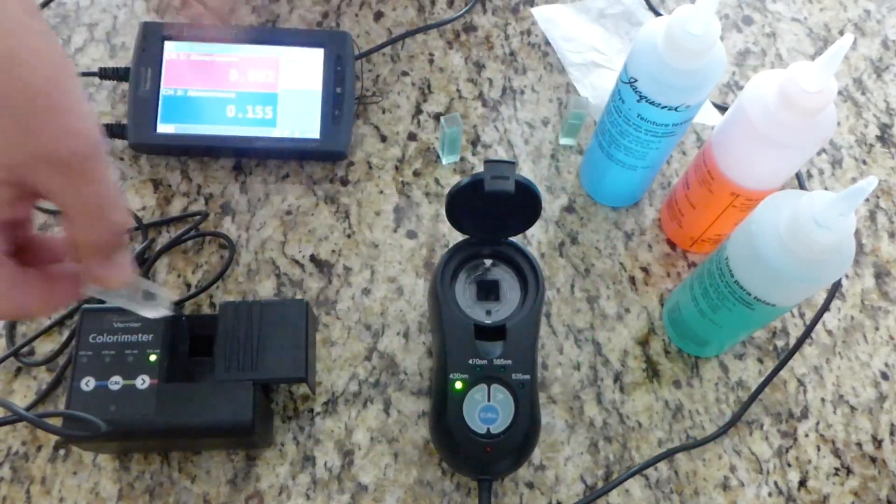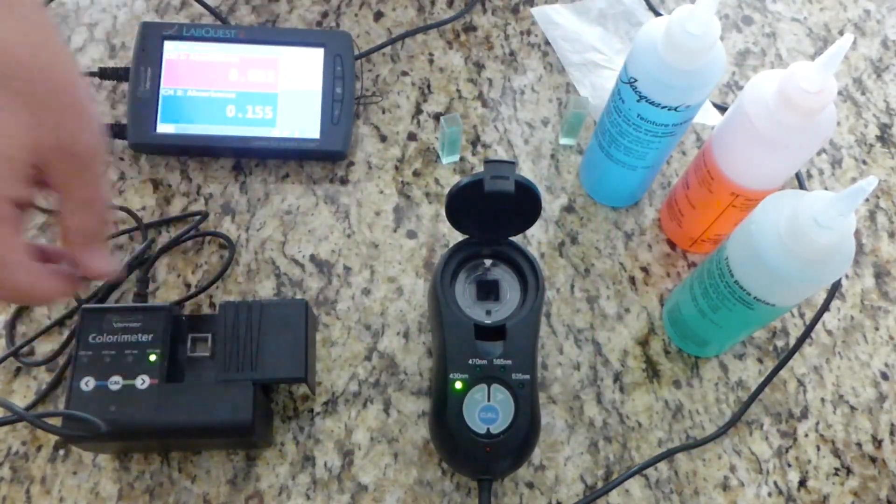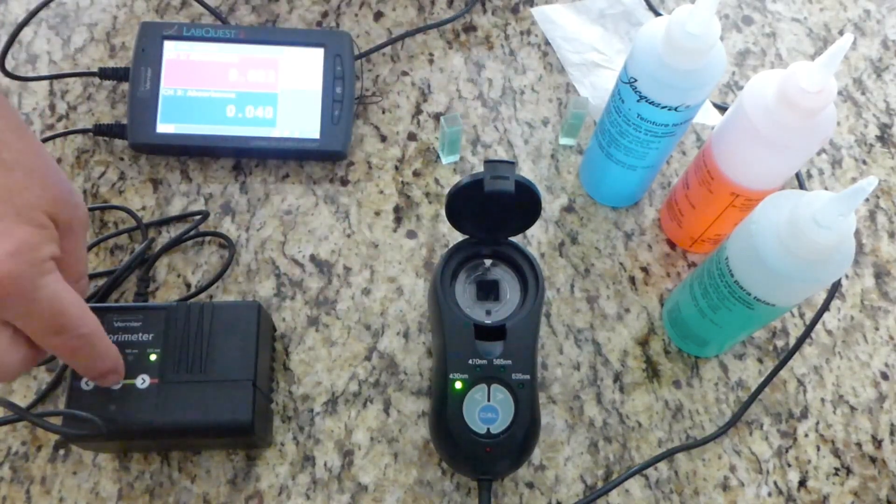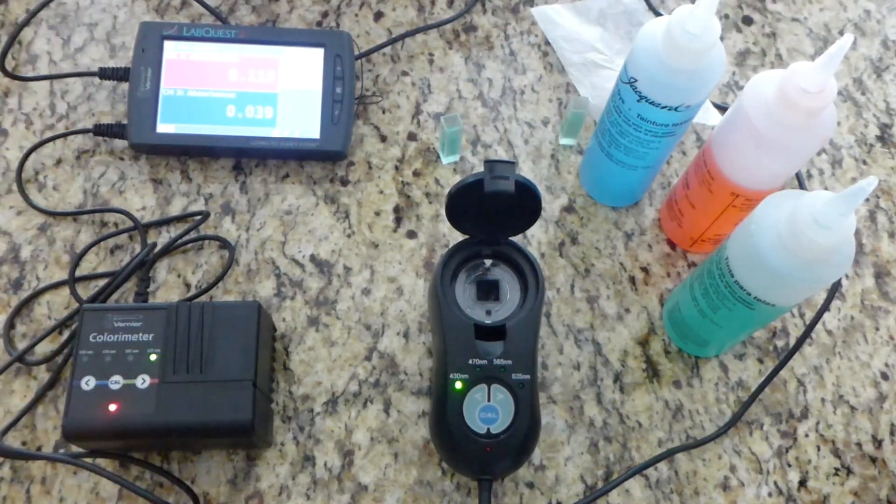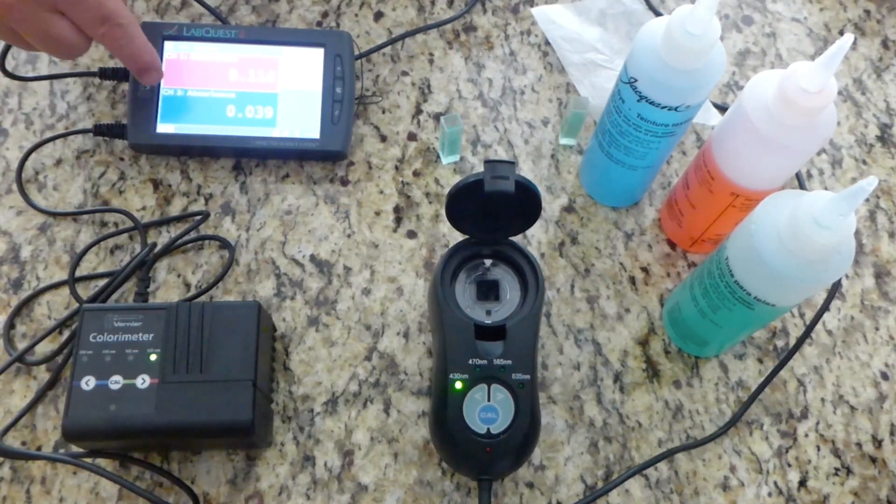The other device works very similarly. You put it in the direction that the light will go, be sure to close the door, push the calibration button, and it will reset itself to zero as well.